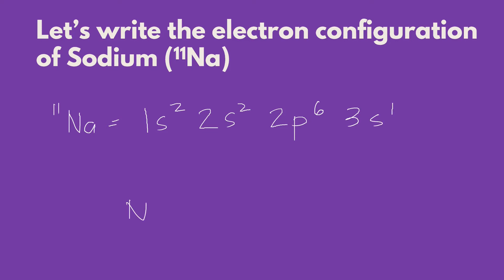On the first energy level, we have two electrons. On the second energy level, we have 8 electrons, because we have 2 and 6, both are located on the second energy level. And then on our last energy shell, we have 1.